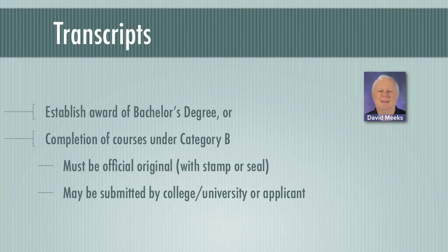Anytime you're qualifying under Category A, B, or C, you must submit a transcript. An official original transcript is required under every category, and it must include either a stamp or a seal. You may submit it yourself, or the college or university may require that they submit it directly to the Office of Enrollment and Discipline — either way is acceptable.